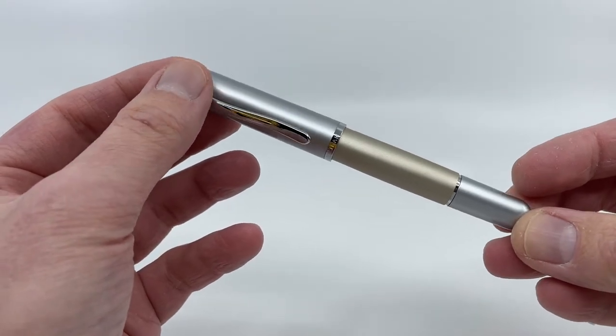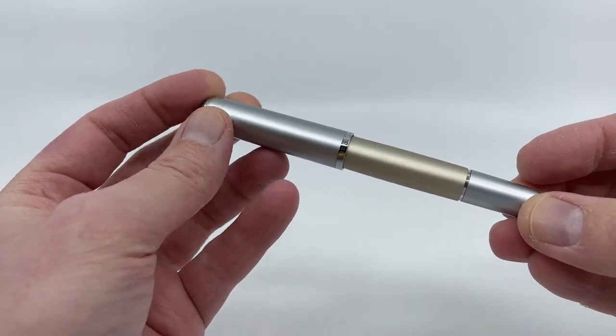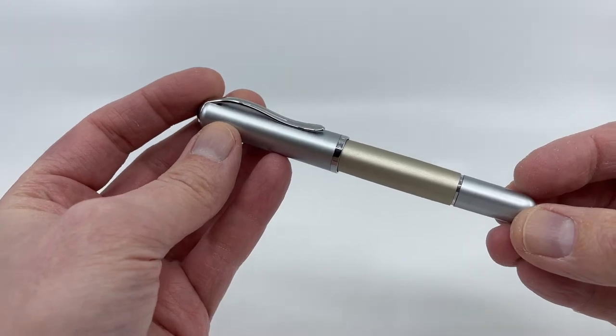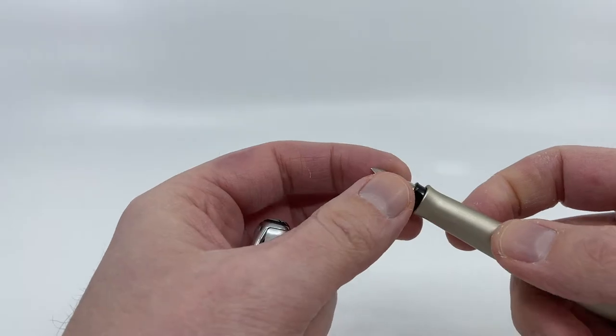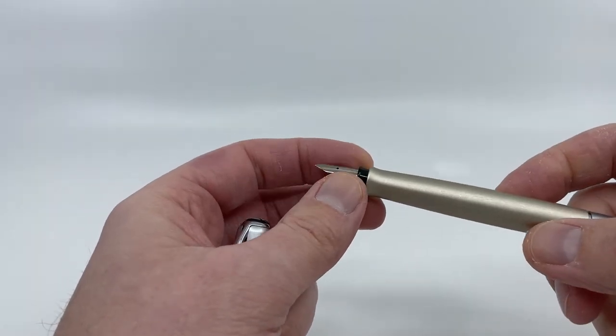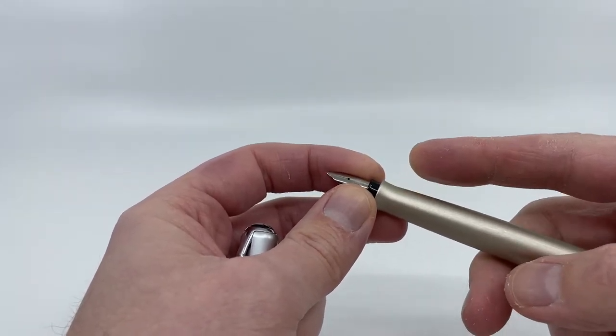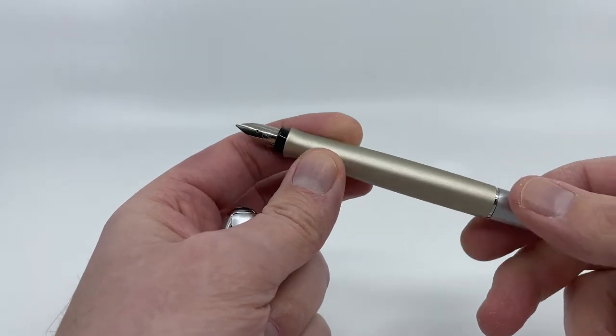This pen is an all plastic construction. Where the epic line deviated from most cartridge style pens, most pens would have the barrel unscrew from the section. That's not true of this line.